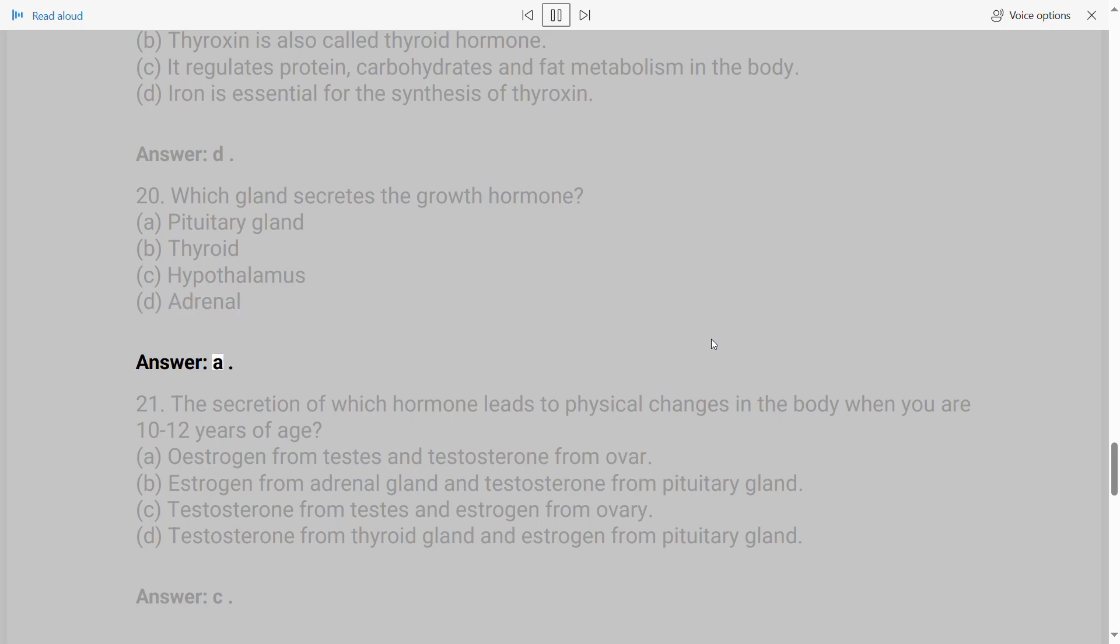21. The secretion of which hormone leads to physical changes in the body when you are 10-12 years of age? A. Estrogen from testes and testosterone from ovary B. Estrogen from adrenal gland and testosterone from pituitary gland C. Testosterone from testes and estrogen from ovary D. Testosterone from thyroid gland and estrogen from pituitary gland. Answer: C.